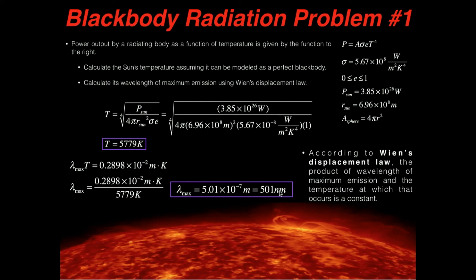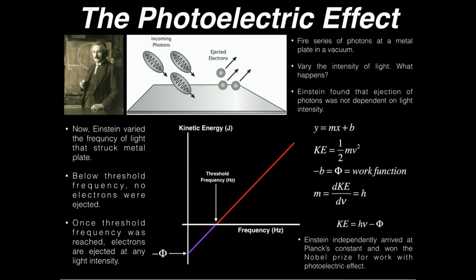Okay, so hopefully that gave you some intuition on how to actually determine the maximum emission wavelength and also calculate the temperature of the sun. Make sure to like this video and subscribe to the channel for future videos and notifications. In the next video, we're going to discuss the photoelectric effect, which has to do with Albert Einstein.